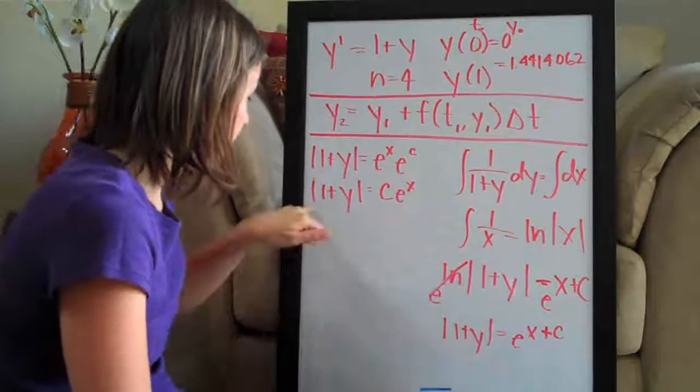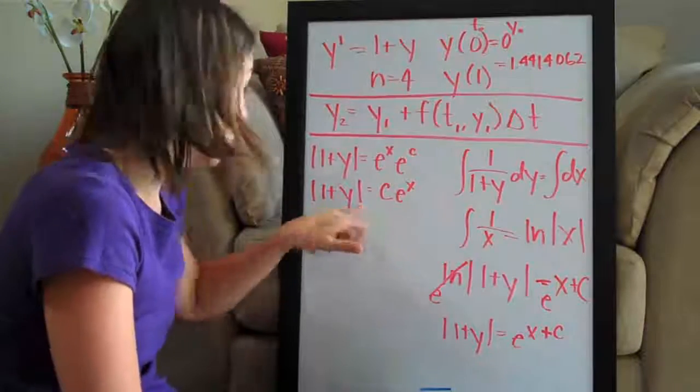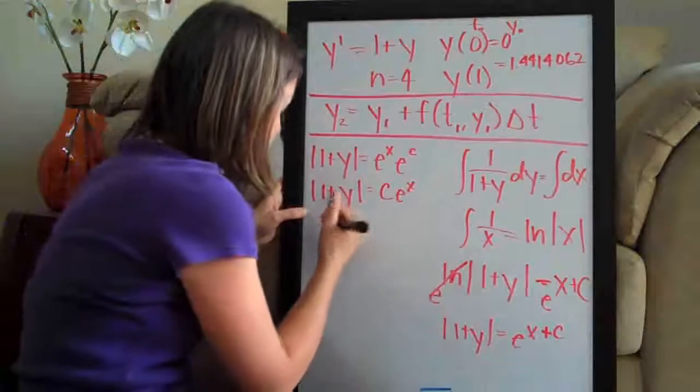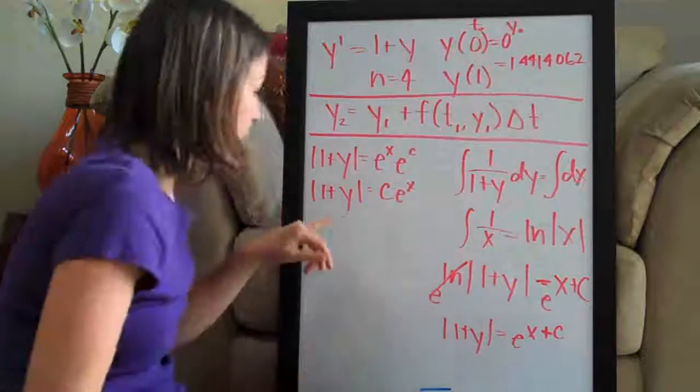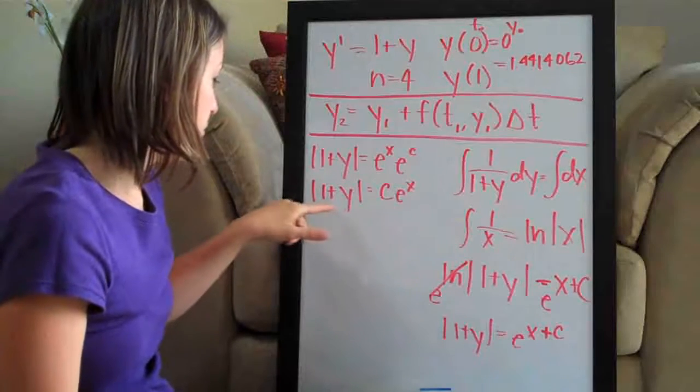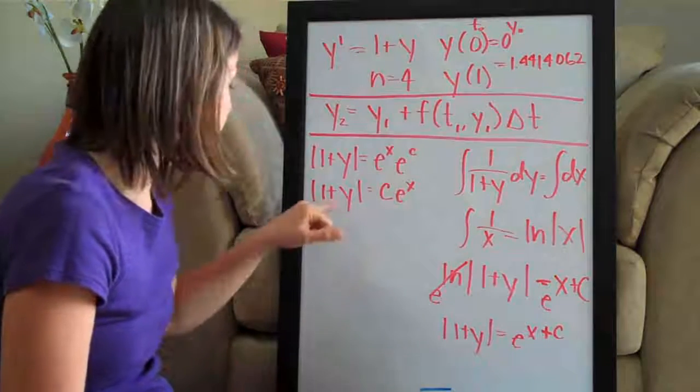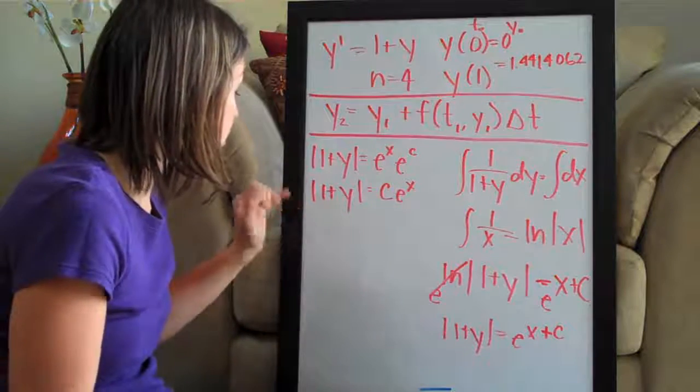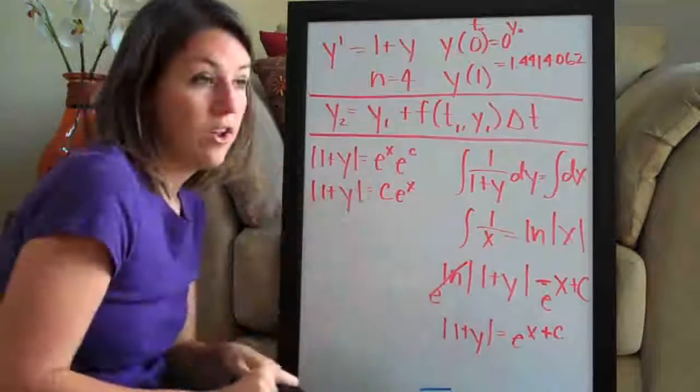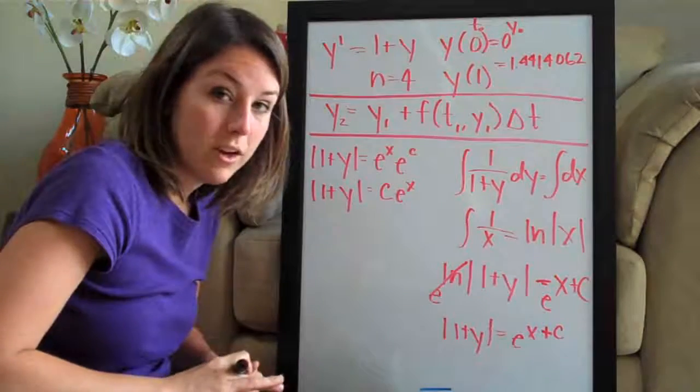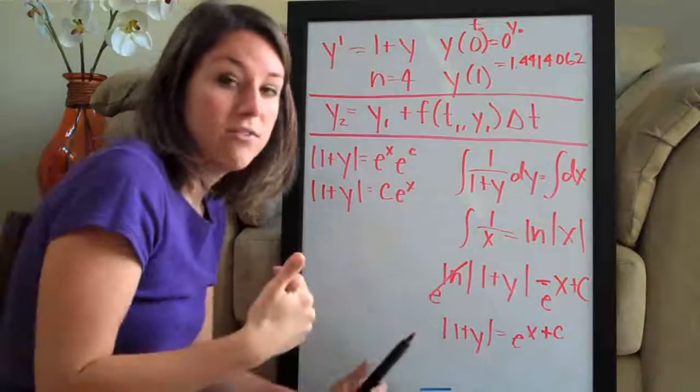Now what we want to do, we want to get rid of these absolute value brackets. And the way that we do that, because absolute value means that, for example, if you plugged in negative 11 for y, you would get negative 10 here on the side and you'd have the absolute value of negative 10. But absolute value means it always has to be positive. So that negative 10 would just become 10.